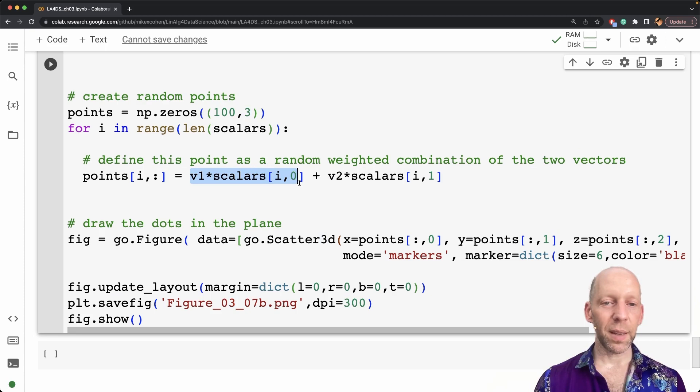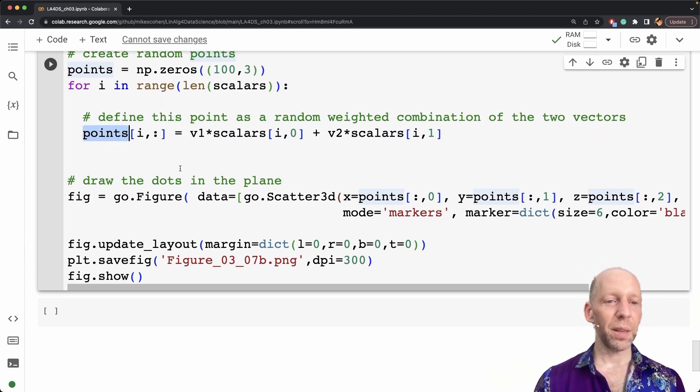Otherwise, this is the same, we take v1 times this scalar plus v2 times this scalar. So this linear weighted combination gives us a set of points. And now we don't draw each one individually, we collect them here in the for loop, and then draw them all at once.